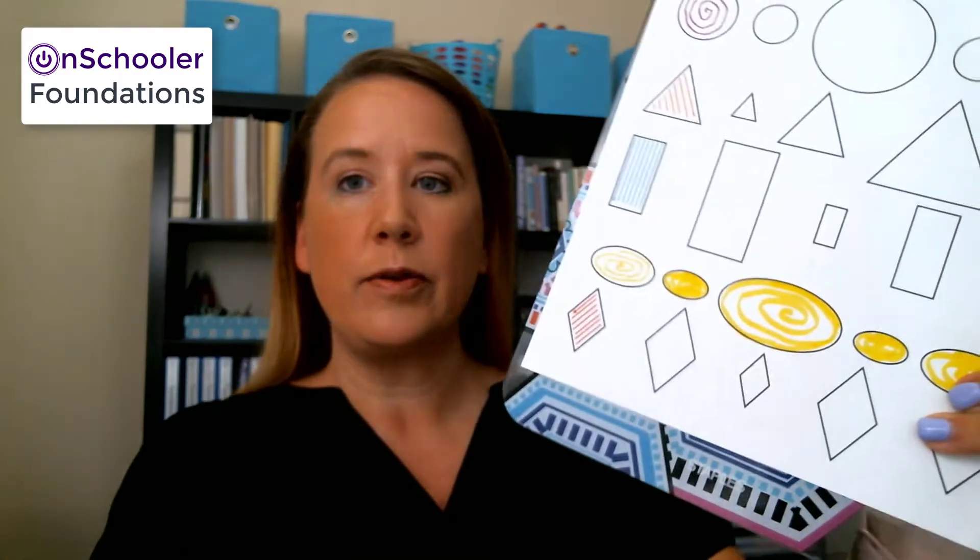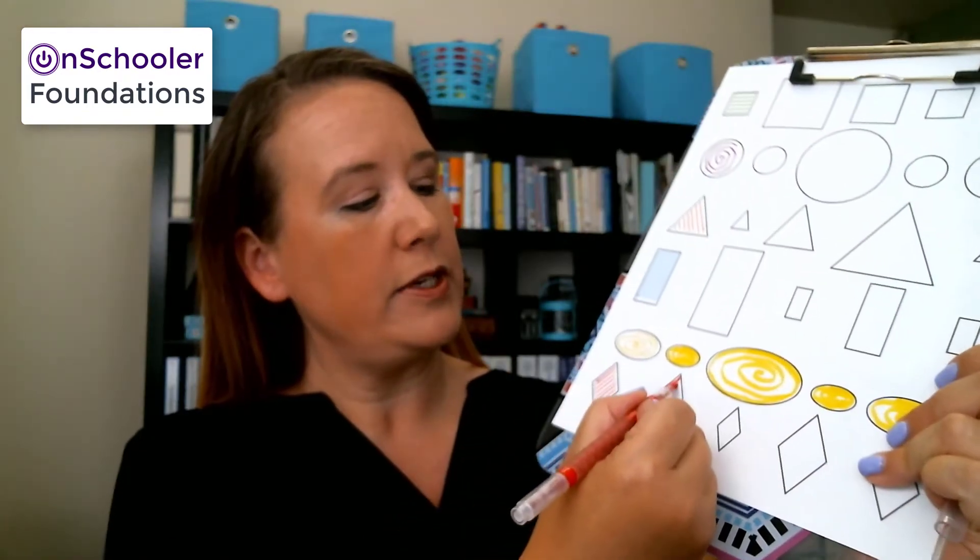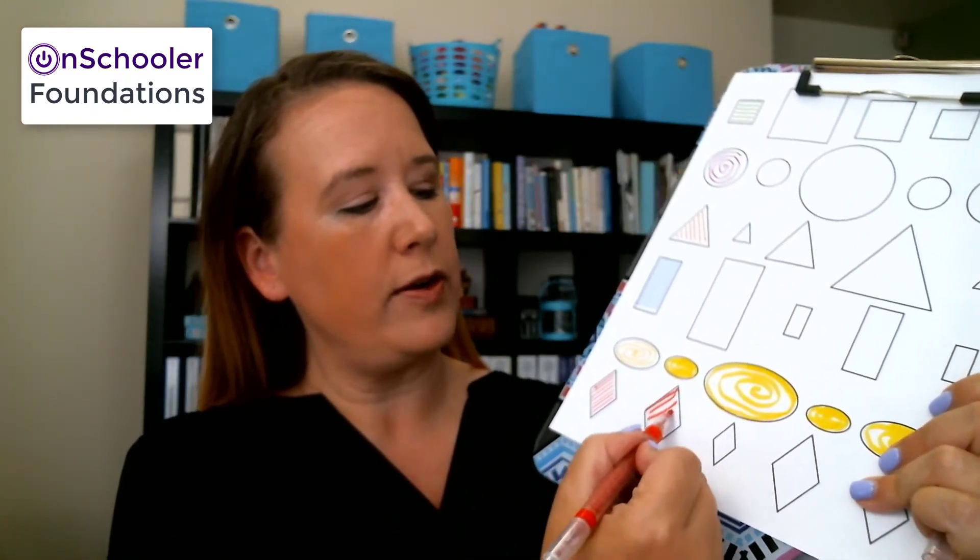So on this diamond here we start at the top and we go down to the left, just like that. And then we just keep adding more lines that go down and to the left until we fill the whole thing in.